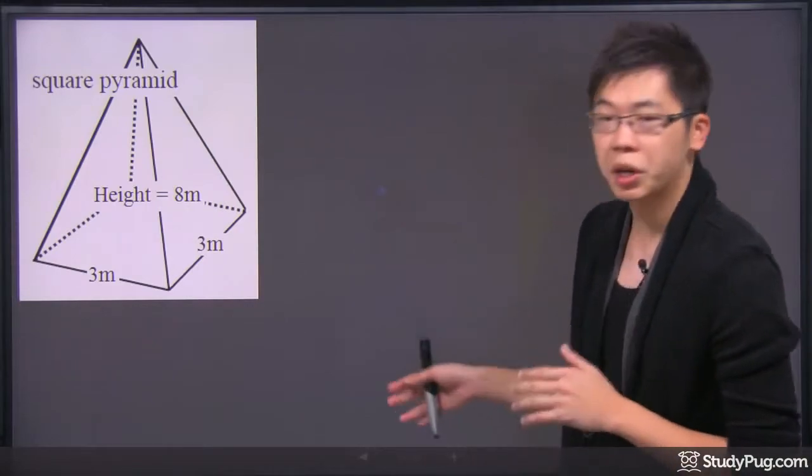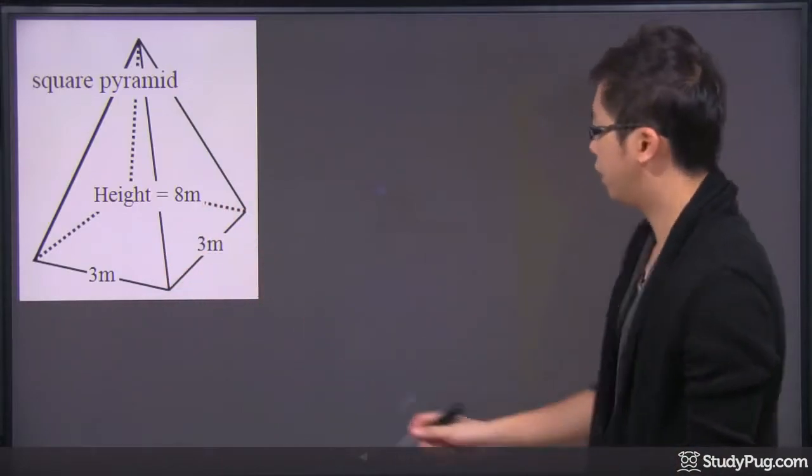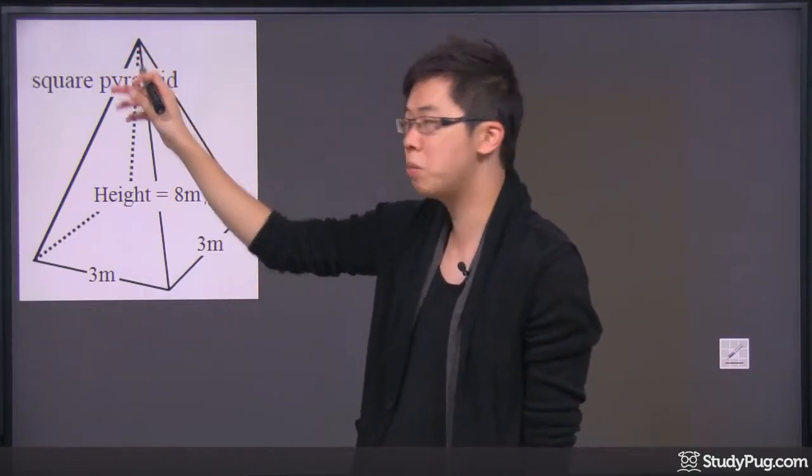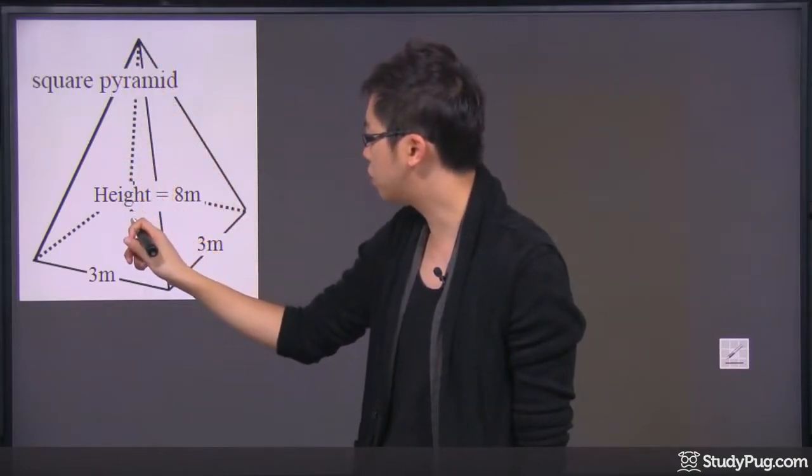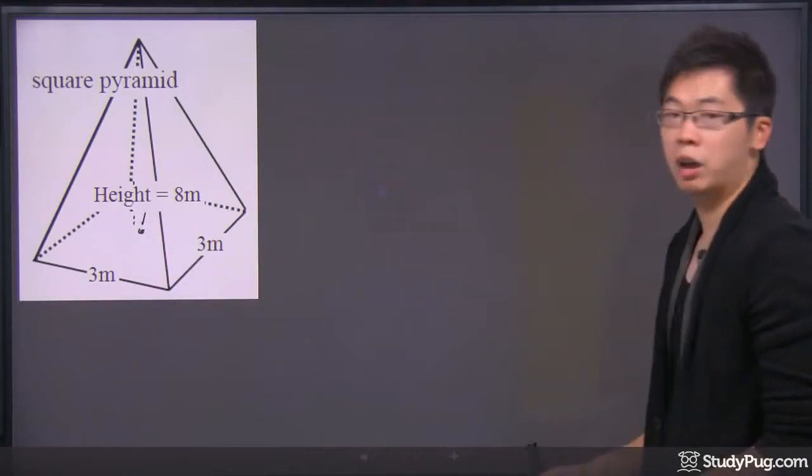So, first thing first, you check out the units to see if they are consistent with each other. That's meter, meter, meter right there. And just for the height, make sure you know the height is actually from the center of the tip of the pyramid all the way down to the center of the pyramid right here in the middle. So, that's where the height will go.